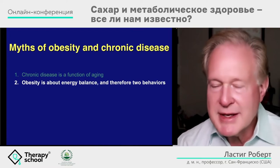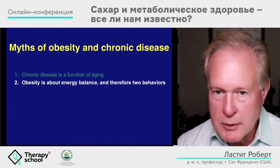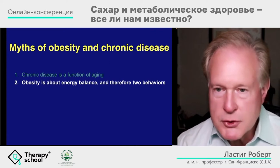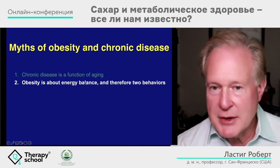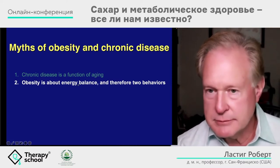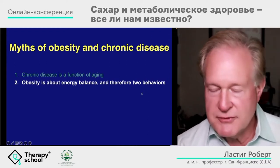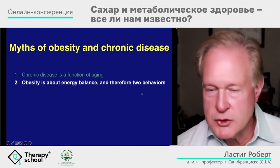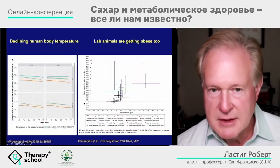When children get the diseases of adults, you know something is wrong. Myth number two: obesity is about energy balance — calories in, calories out — and therefore about two behaviors: too much food in, too little exercise out. Gluttony and sloth. That's the myth.